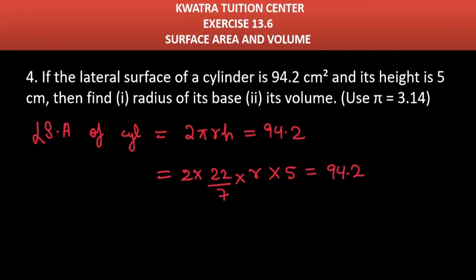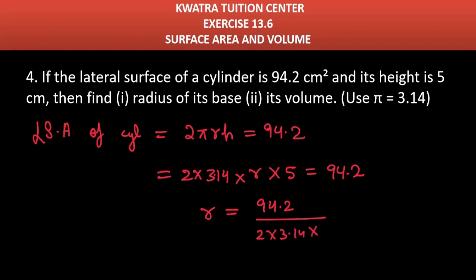Now what do you want to do? Use cross-multiplication. We will take π as 3.14, so I am writing 3.14. R's value is 94.2 divided by 3.14 into 5. You can see 2 into 5 is 10, and if you multiply by 10, you get a decimal shift.